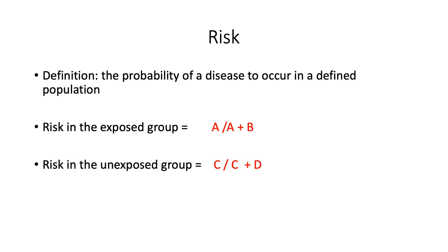As public health professionals, we are concerned with a population's overall health status. This can be on the community, state, or national level. Some examples include the health status of African-American women living in Brooklyn, New York, and young children ages 0 to 5 living in the country of Nigeria.